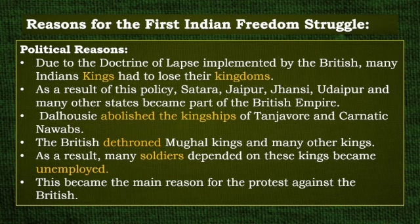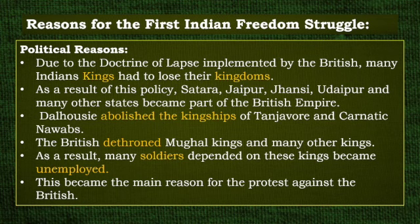As a result of this policy, Satara, Jaipur, Jhansi, Udaipur and many other states became part of the British Empire. Lord Dalhousie abolished the kingship of Tanjore and Carnatic Nawabs. The British dethroned Mughal kings and many other kings. As a result, many soldiers who depended on these kings became unemployed, and this became the main reason for the protest against the British.